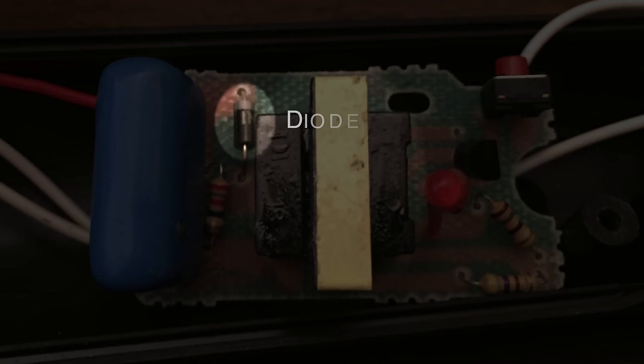The transformer is stepping up the voltage from the batteries and is also involved in the oscillating part of the circuit. This diode is rectifying the voltage coming out of the transformer, and we call this a half-wave rectifier because it's only filtering half of the wave out.